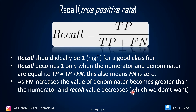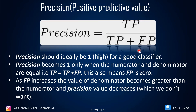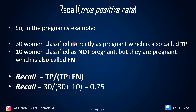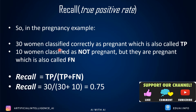Now let's look at recall. The formula is: Recall = True Positives / (True Positives + False Negatives). Notice the difference from precision — precision uses false positives in the denominator, while recall uses false negatives. Similarly, if false negatives = 0, recall = 1. As false negatives increase, recall decreases — which we don't want.